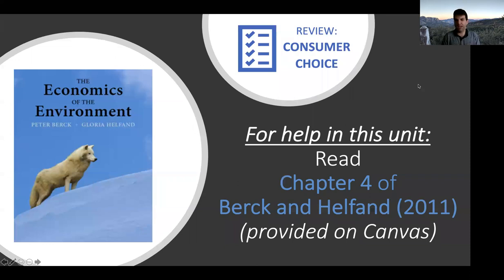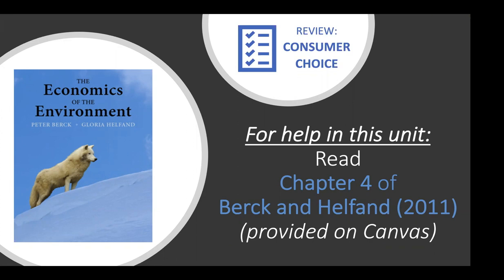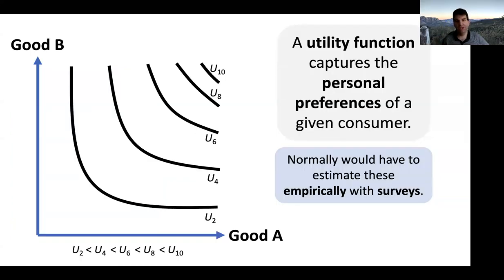I'm sure everybody has read the Birken-Helfand and completed activity A4, which was due before this lecture. This idea of indifference curves and budget constraint lines—you can see they work through this in the chapter, so it could be an additional reference. Hopefully we're getting into understanding these shapes, and there have been some questions about where these things come from.